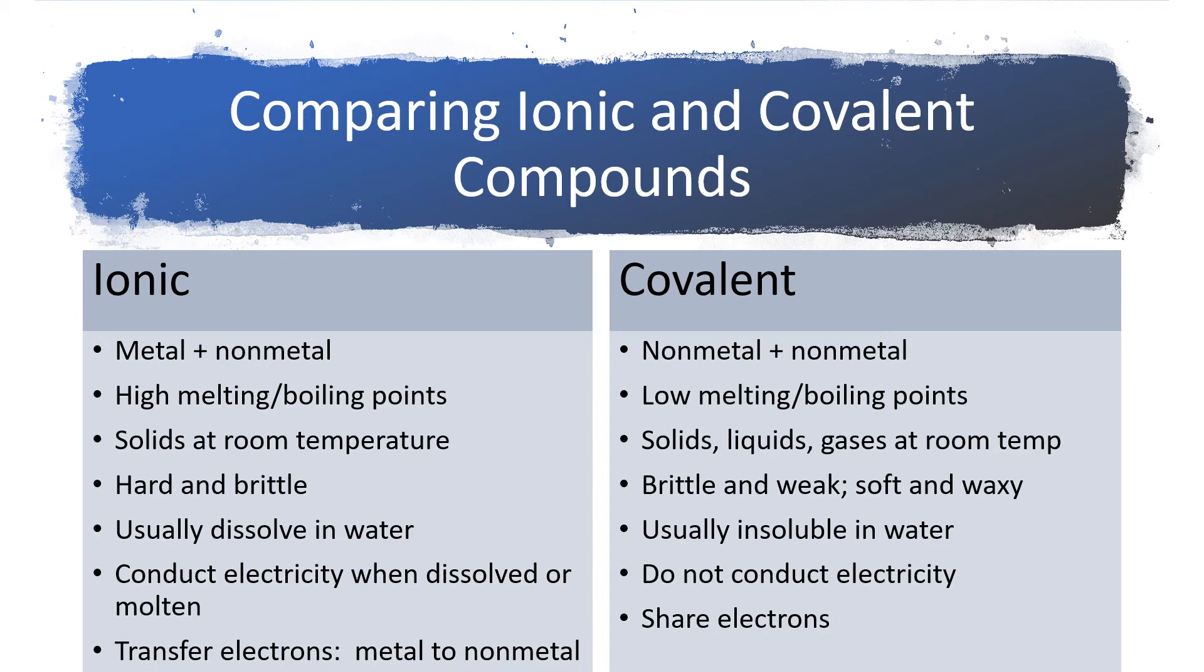And for ionic compounds, when that ionic bond gets formed, they are going to transfer electrons from the metal to the non-metal. And in the case of covalent bonding, the atoms are going to share electrons.